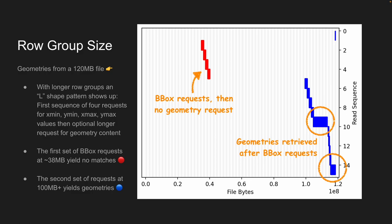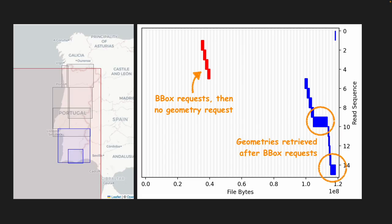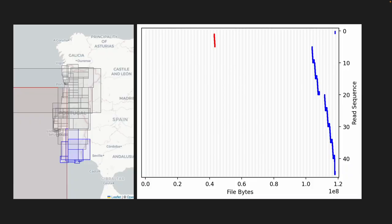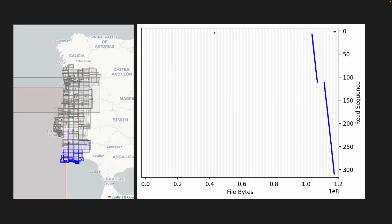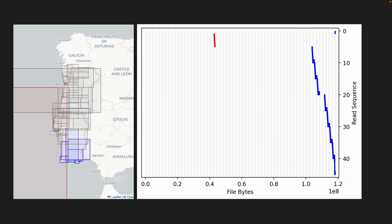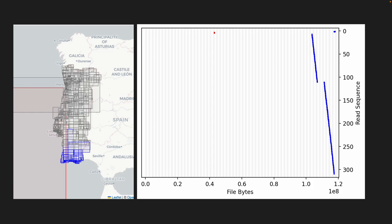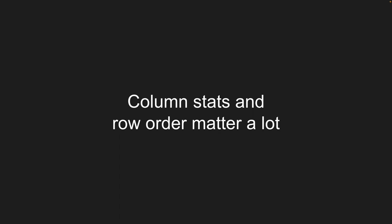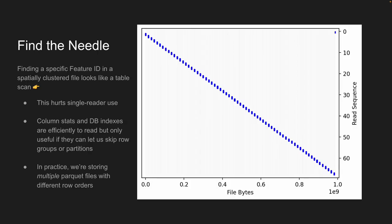Some parts of the file — like that red bit — we do read bounding box data to figure out if there's anything we want, because column stats tell us there may be. But we end up tossing that on the floor. By tweaking different row group sizes, you can trade off between reading a lot of useless stuff in big chunky chunks versus not reading much useless stuff at all but having many more read sequences.